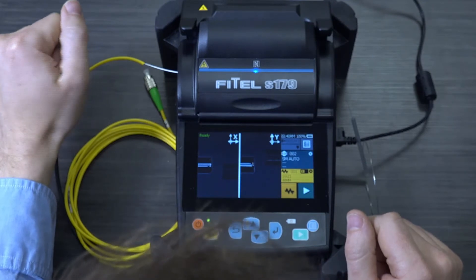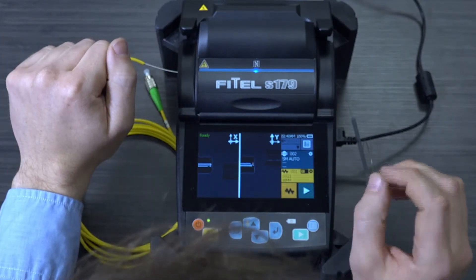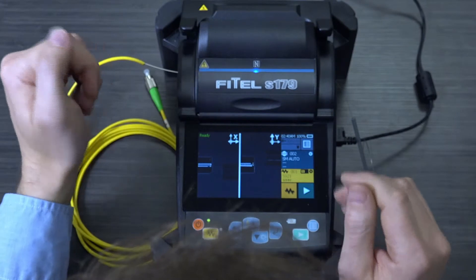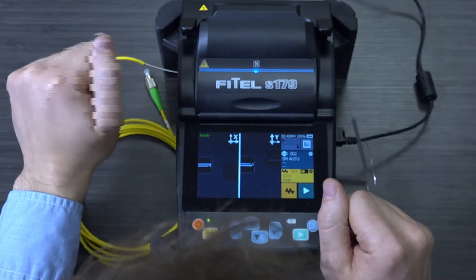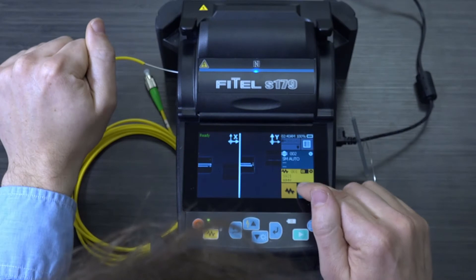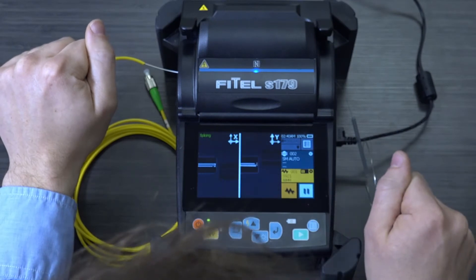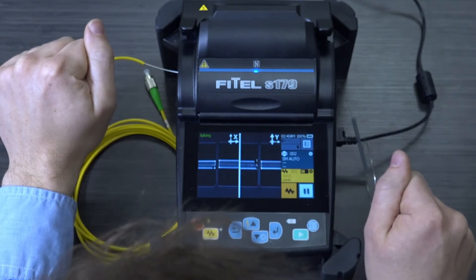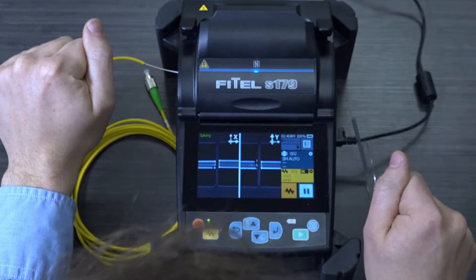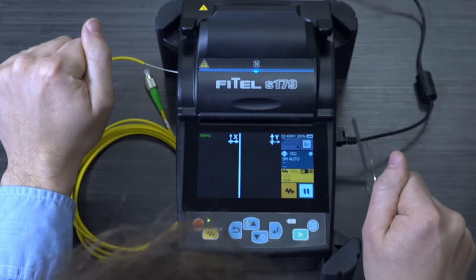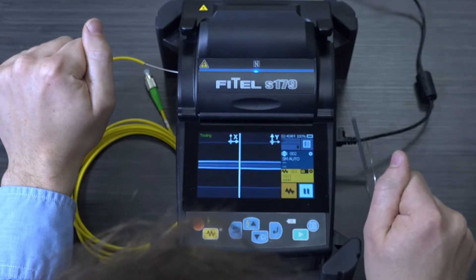What the splicer will do is it will do a very quick flash of the electrodes. It will clean both sides of the fiber, it will further align them, and then it will fuse them. So there's the clean, there's the alignment, and there's the fusion.